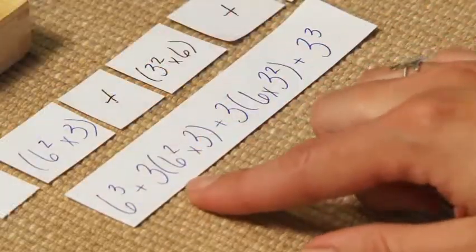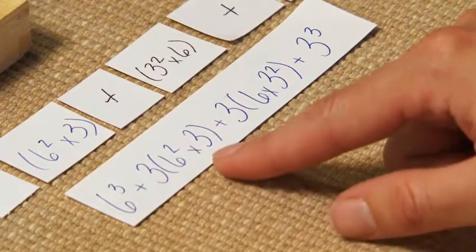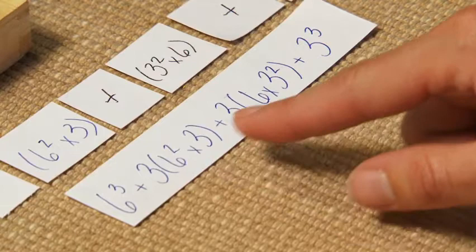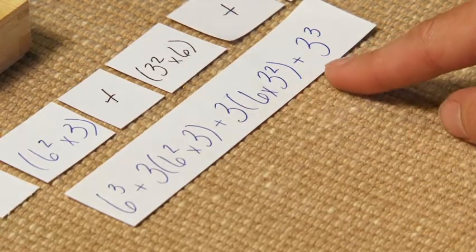The students can reduce these terms. They have 6 cubed plus 3 times 6 squared times 3, plus 3 times 6 times 3 squared, plus 3 cubed.